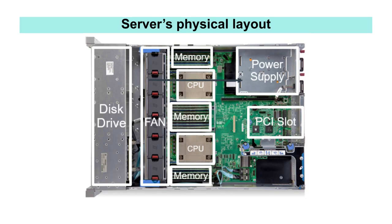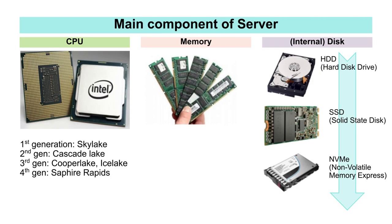This is the inside view of the server — what you can see when you remove the top case. You can see space for two CPUs, memory, disk, power supply, and PCI cards. The internal space of a server can be basically similar to that of a PC or laptop computer used at home. The main components that make up a server are CPU, memory, and disk. CPU stands for Central Processing Unit and is a device for calculations, memory is a device for high-speed short-term data storage, and disk is a device for long-term storage.